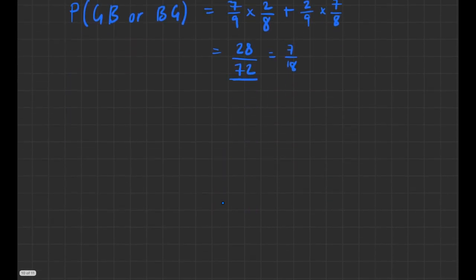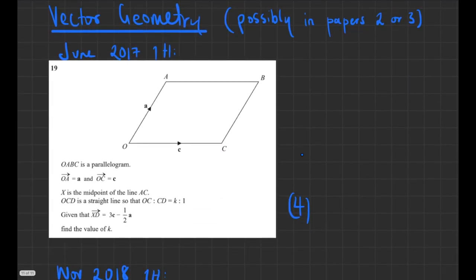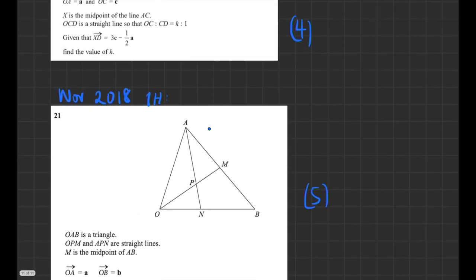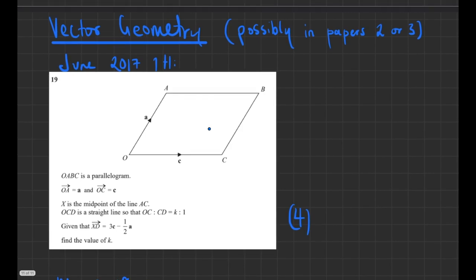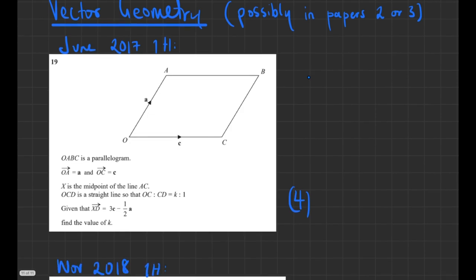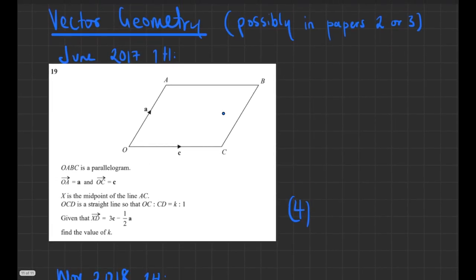That covers probability. The final topic is vector geometry. There are only two non-calculator papers with vector geometry questions, so it's not exclusively a non-calculator topic — but it's worth revising because it will likely come up in at least one of the three papers. Here are two examples from non-calculator papers. The June 2017 paper was probably one of the hardest non-calculator papers of the new specification.